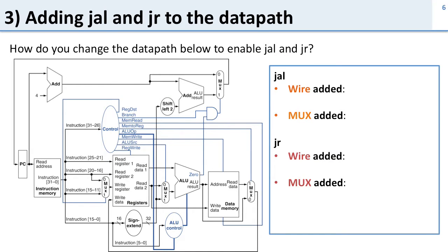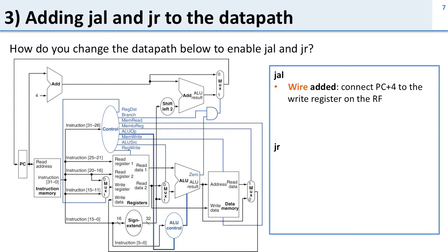Third question: adding jump-and-link (JAL) and jump-register (JR) to the datapath. How do we change the datapath to add JAL and JR? We need to add some wires and some muxes. For JAL, remember we're going to jump and then store the next PC value into the register file. So we need to add a wire that takes the next PC value and writes it into the register file.